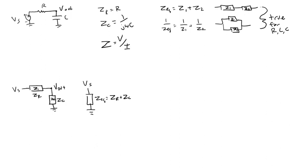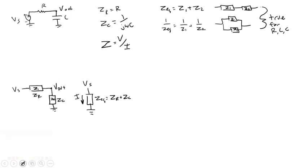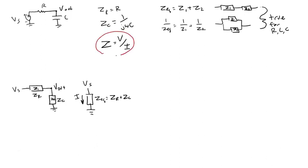And using the definition of impedance, I can find the current through that circuit, just like you would with Ohm's Law. I have my definition of impedance up here, I'm going to use that down here. My equivalent impedance, ZR plus ZC, is equal to Vs over I.